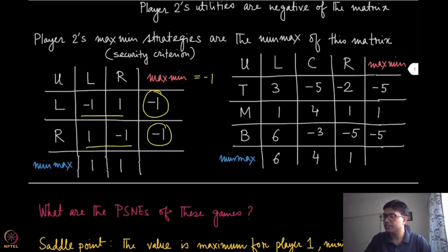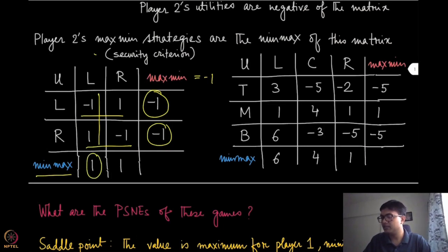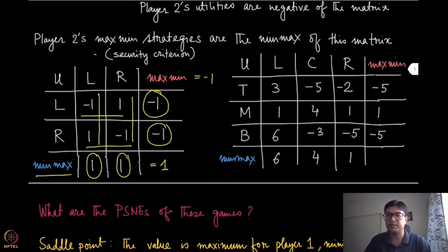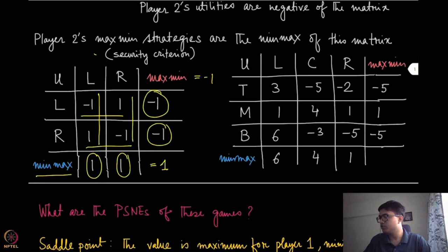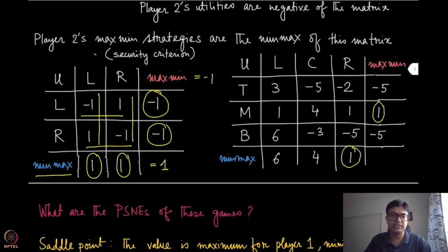Similarly, when you compute the minmax, you are taking the max with respect to each column. In the first column you take the max, which is one, and in the second column it is also one. So the min of those two maximum values is going to be equal to one. These two things — maxmin and minmax — are not the same for the penalty shootout game. For the second game, if you compute the maxmin value, you find it is one, and the minmax is also one. In this case, they are the same.